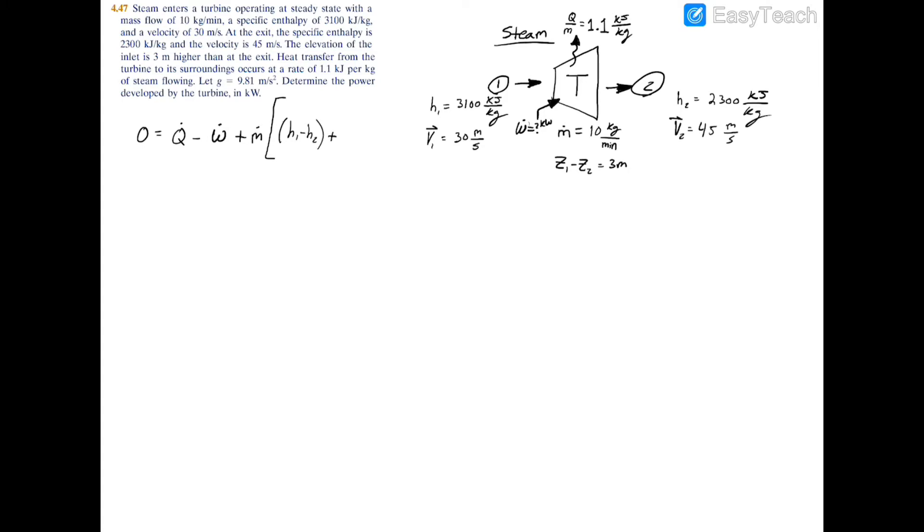Plus the kinetic energy, which would be v1 squared minus v2 squared divided by two—remember, one half mv squared. And I'm just gonna make another line here: plus mgz, so we have mass flow rate times gravity times the change in elevation, z1 minus z2.